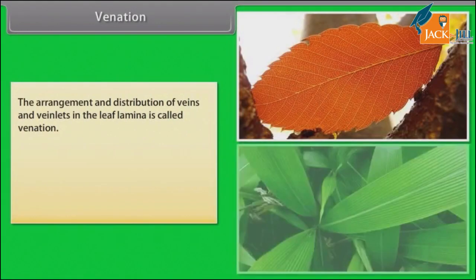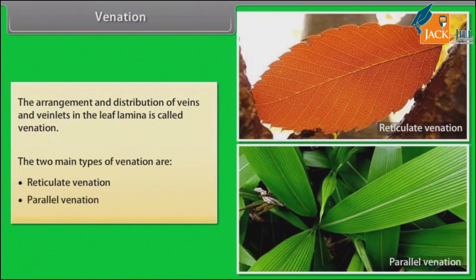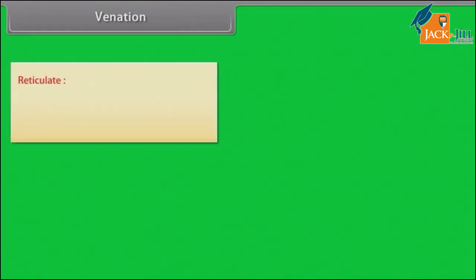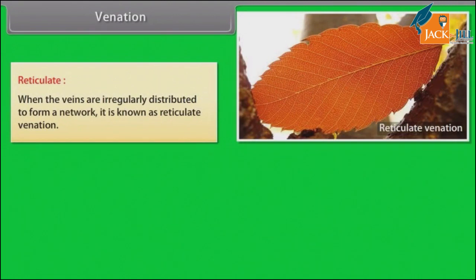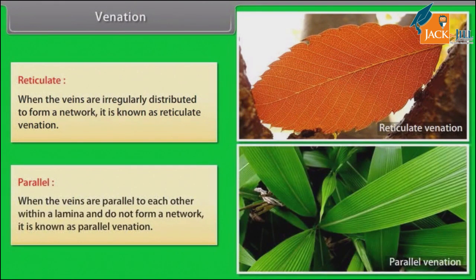The arrangement and distribution of veins and veinlets in the leaf lamina is called venation. The two main types of venation are reticulate and parallel. When the veins are irregularly distributed to form a network, it is known as reticulate venation. When the veins are parallel to each other within a lamina and do not form a network, it is known as parallel venation.